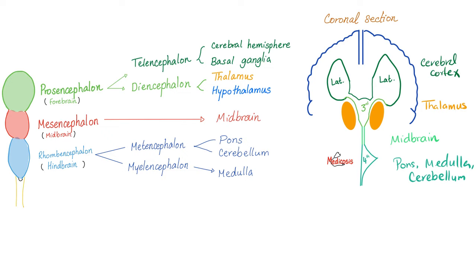From the third ventricle, CSF goes to the fourth ventricle through the cerebral aqueduct of Sylvius. After the fourth ventricle, CSF exits through one median opening — the foramen of Magendie — and two lateral openings — the foramina of Luschka. From there, CSF circulates all around your brain and spinal cord in the subarachnoid space.